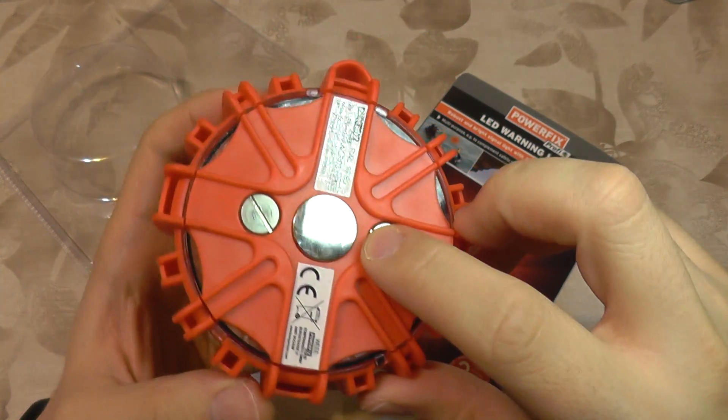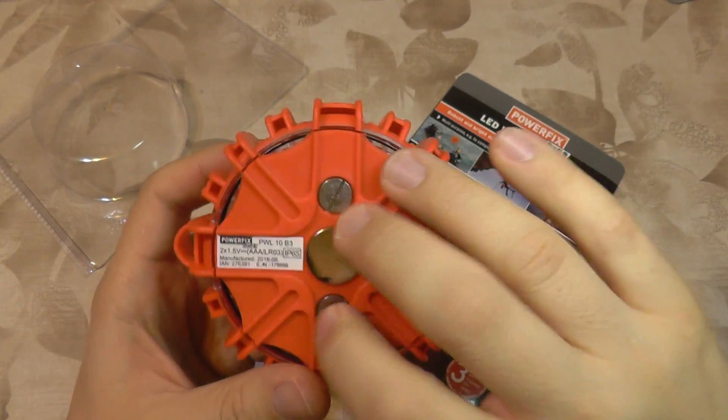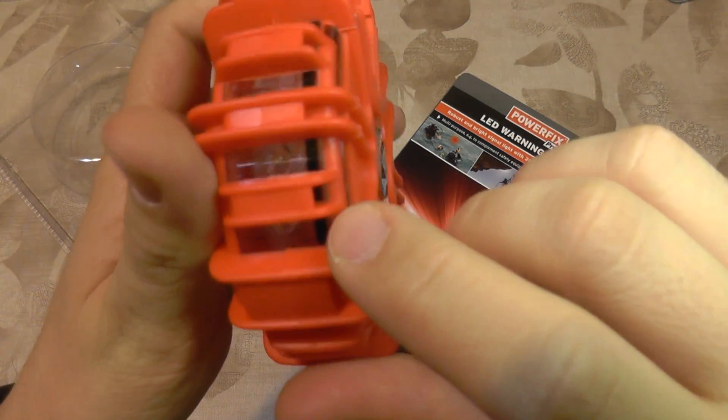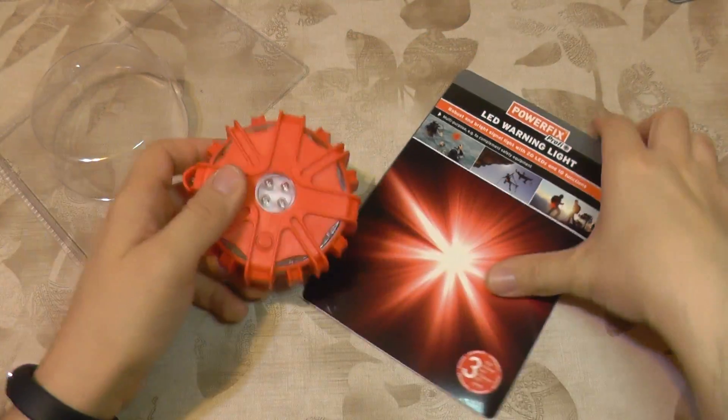Here is a magnet and the batteries, which are already supplied, are inside. The cap is sealed with a rubber gasket and fixed with screws, so it's watertight.